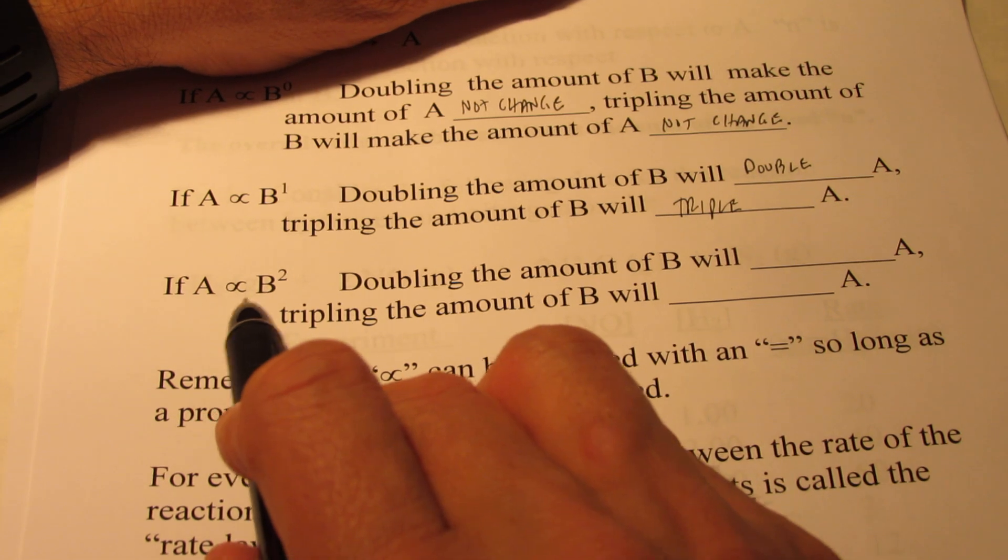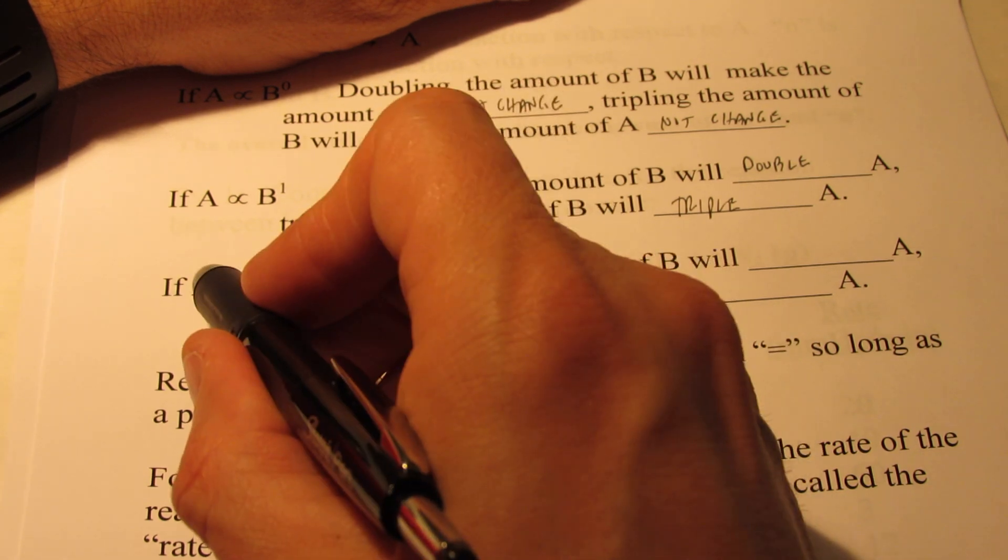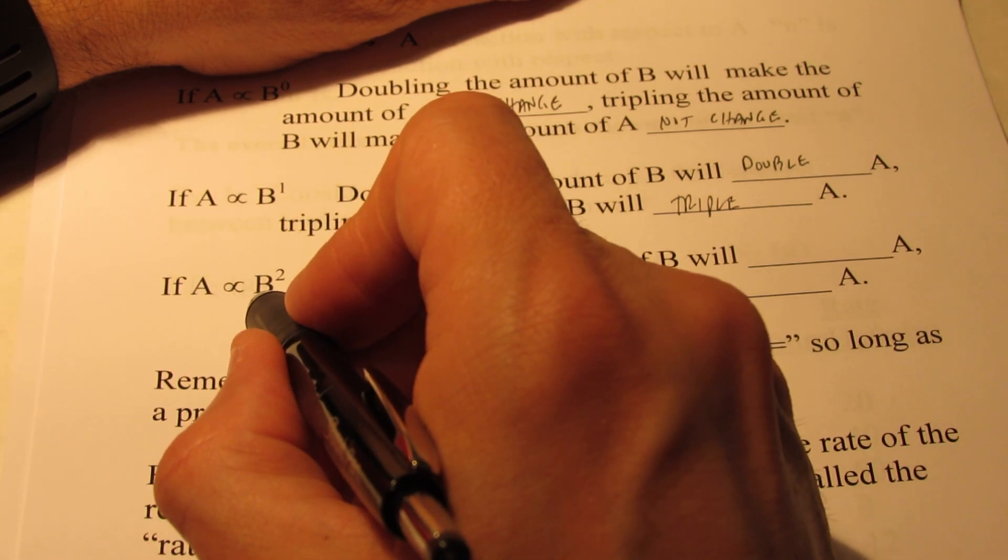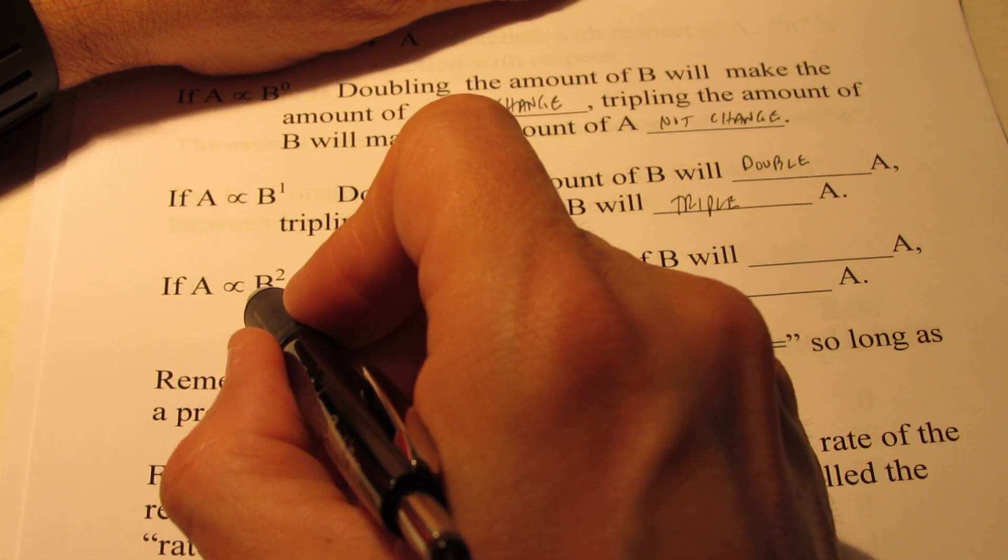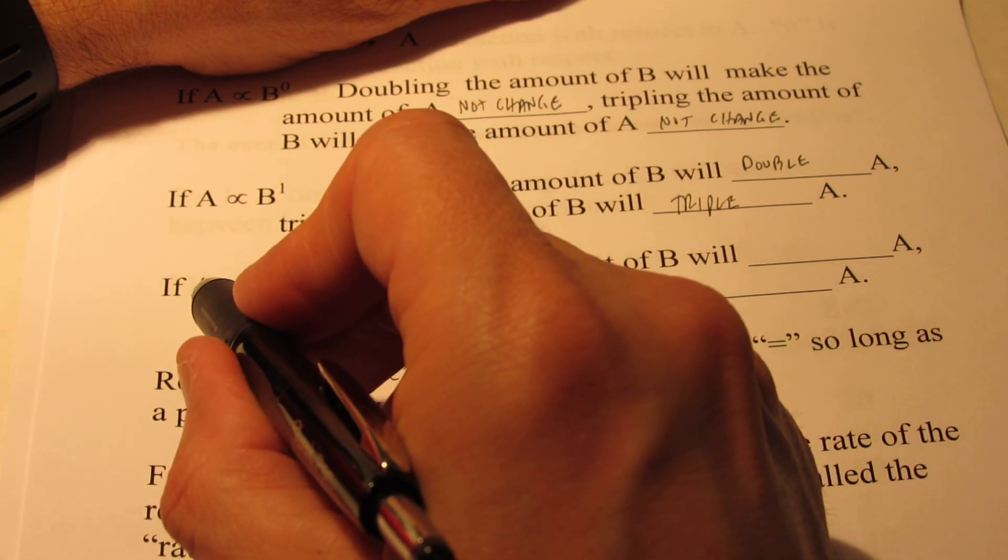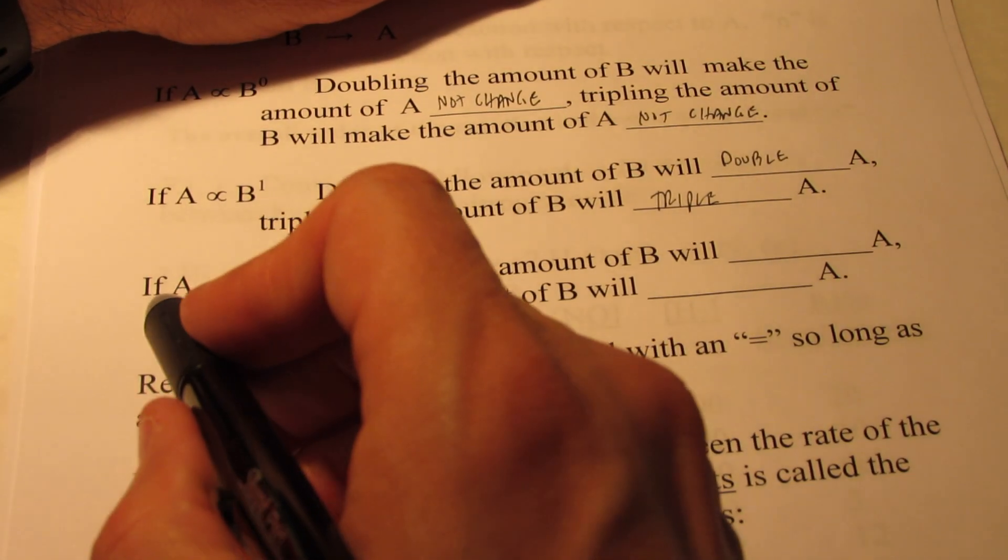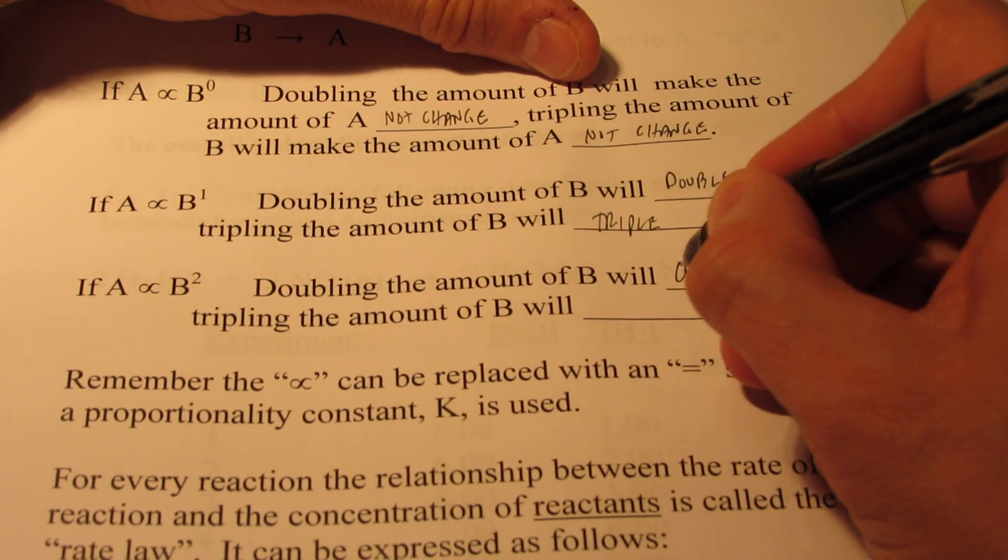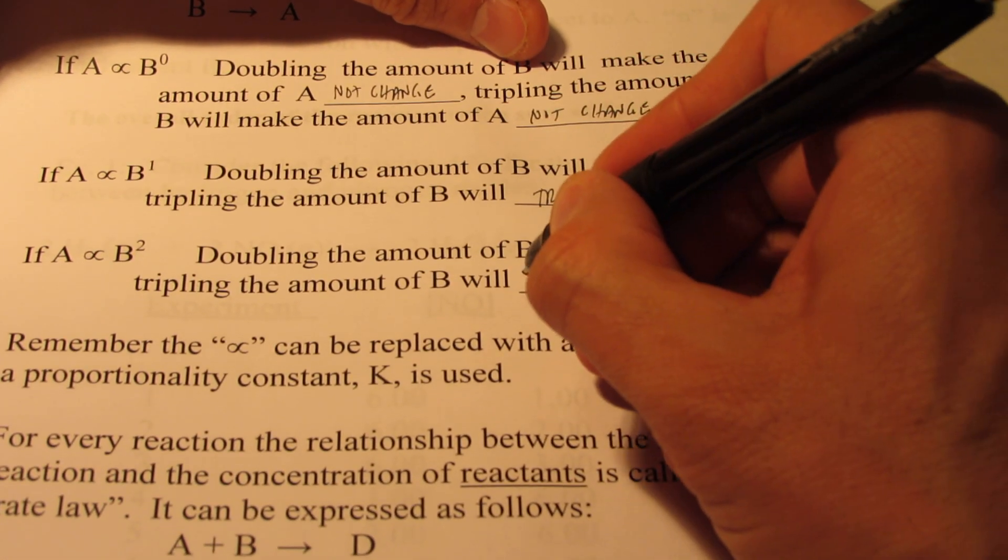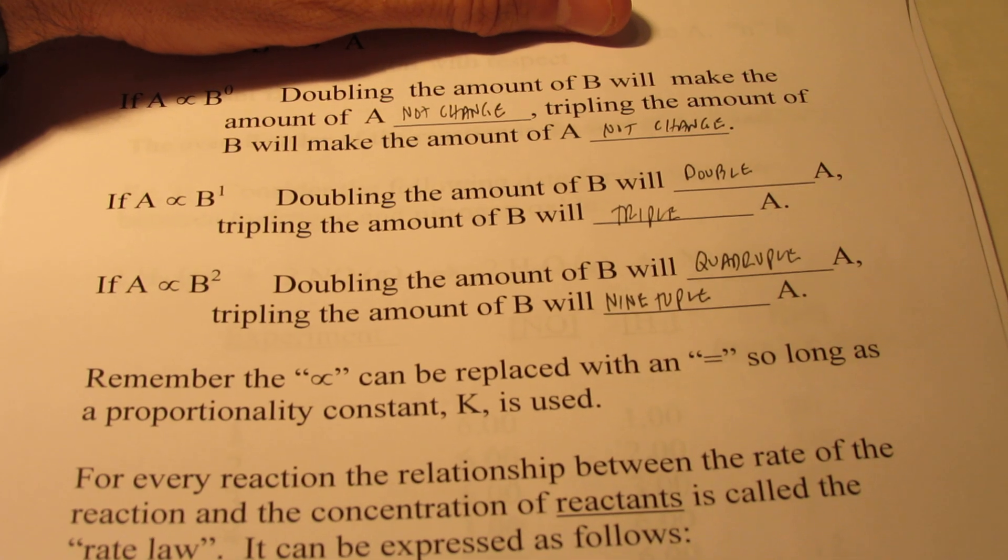And finally, what if A is proportional to B squared? If B is equal to 1, 1 squared is 1. Let's double B. Now B is equal to 2. 2 squared is 4. So by doubling B, I quadrupled A. If I triple B, 3 squared is 9. So tripling B, 9 tuples A. Whatever I do to B, I square it. And that's what its effect will be on A. So doubling B will quadruple A, and tripling B will 9 tuple A. Whatever I do to B, I square it, and that's what effect it will have on A.